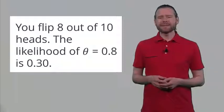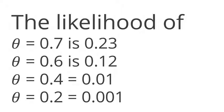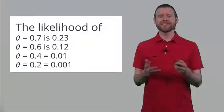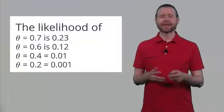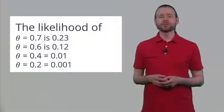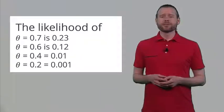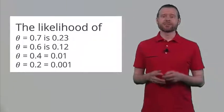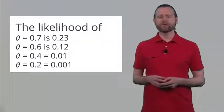But we can also calculate the likelihoods for all sorts of different hypotheses. Let's say you have the idea that the true probability of heads in the long run is 70%, or theta = 0.7. The likelihood of that being true, based on the observed data of 8 out of 10 heads, is 0.23. The likelihood of theta = 0.6 is 0.12. So it becomes less and less likely the farther away you go from the observed data.